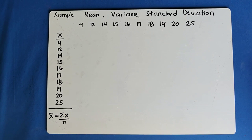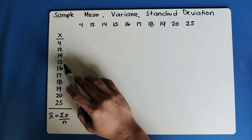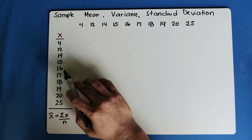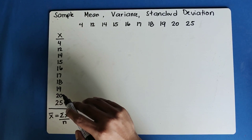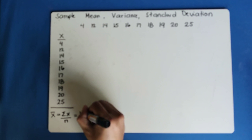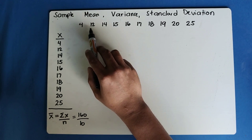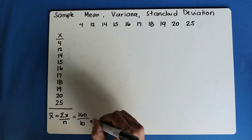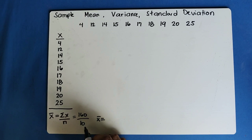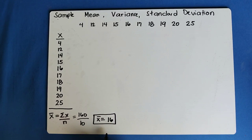Let's add the data first: 4 plus 12 plus 14 plus 15 plus 16 plus 17 plus 18 plus 19 plus 20 plus 25. You can use your calculator to make your calculation easier. The result is 160. Our n is 10 since we have 10 data here. So our mean is 160 divided by 10, and the result is 16. This is our sample mean.